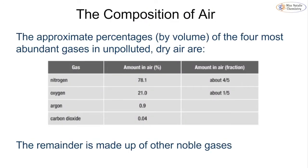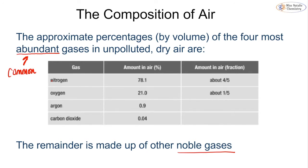The composition of air in our atmosphere is made up of a number of different gases, but there are four that are the most abundant — and abundant just means common. The four most common gases in dry unpolluted air are nitrogen at 78.1%, oxygen at 21%, argon at 0.9%, and carbon dioxide at only 0.04%. The remainder is made up of other noble gases such as helium or neon, but you only need to know these four.